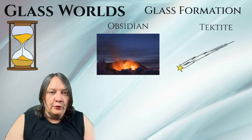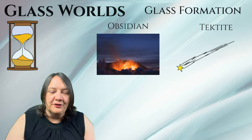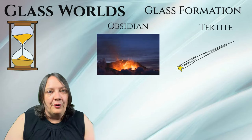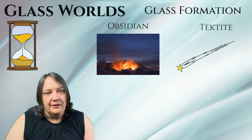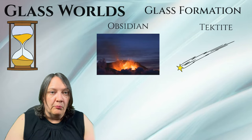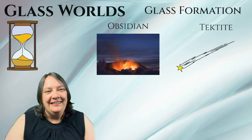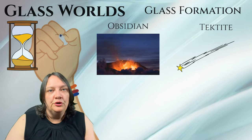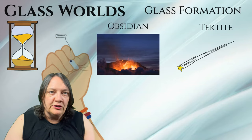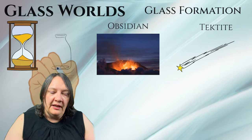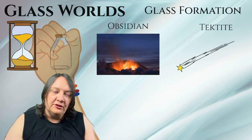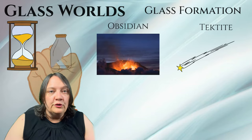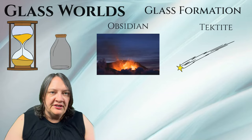Tektites are found in several regions around the world known as strewn fields, where meteorite impacts have occurred in the past. Some well-known types include Moldavites, found mainly in the Czech Republic; Australites, found in Australia; and Indochinites, found in Southeast Asia. In a fantasy world, you could use tektite glass as special components tied to your magic system — calling it something like 'star glass' or 'the gift of the sky.' It could also feed into your culture's religious elements, where priests claim this glass carries the will of the gods.